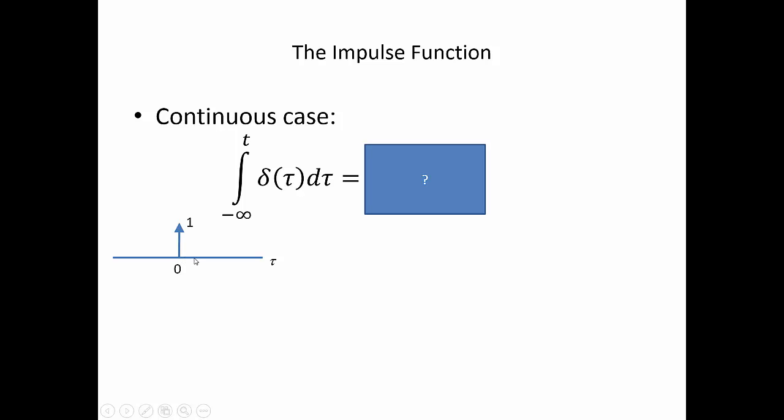And we're going to have 1 if we integrate from minus infinity up to here, minus infinity up to here, minus infinity up to here. For all those values, we get an area of 1. Therefore, we have an area of 1 if t is greater than or equal to 0, because that's when we're integrating up and including that 1. And we have an area of 0 if we're integrating just up to a place less than 0.